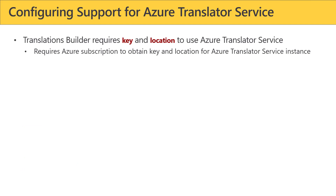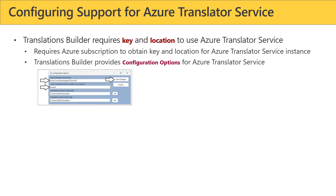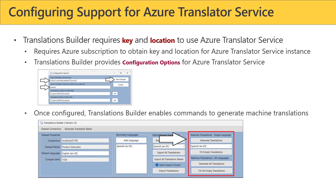Now let's turn our attention back to Translations Builder and use this key and location we just got to access an instance of the Azure Translator Service. There is a menu command called Configuration Options, and when we execute that command, it prompts us with a dialog where we can go ahead and enter in the Azure Translator Service key and location. Once you do, the user interface lights up with extra commands that are only available when you have configured support for the Azure Translator Service.